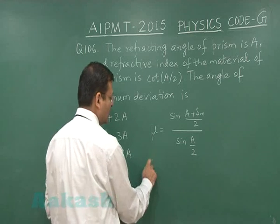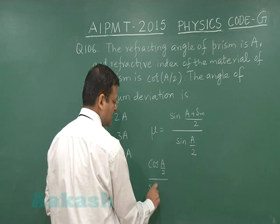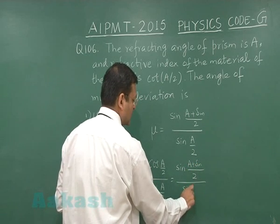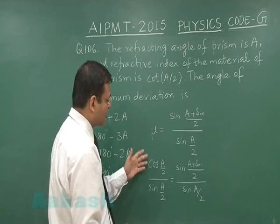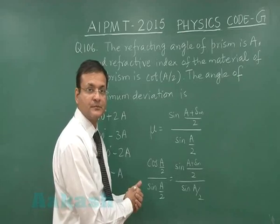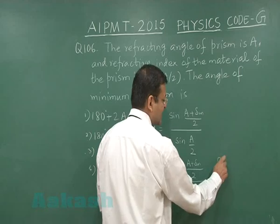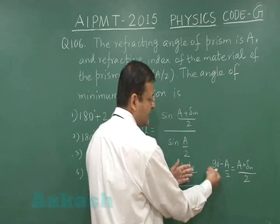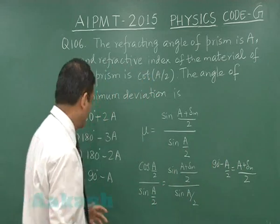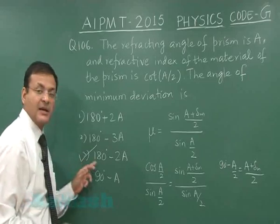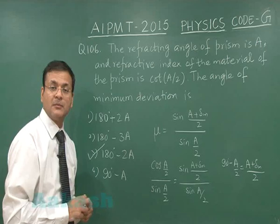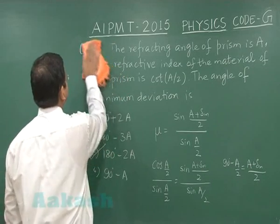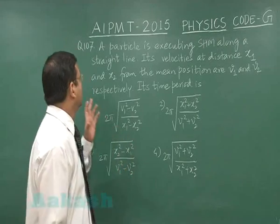We write cot(A/2) = cos(A/2)/sin(A/2). Setting this equal to the prism formula, the sin(A/2) denominators cancel. Writing cos(A/2) as sin(90° − A/2) and comparing with sin[(A + δm)/2], we get: 90° − A/2 = (A + δm)/2. Solving gives δm = 180° − 2A. Marking option 3 as the answer for question 106. Moving to question 107.